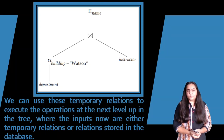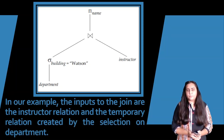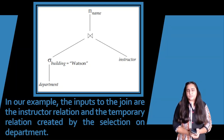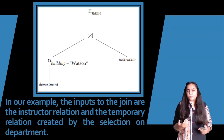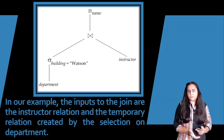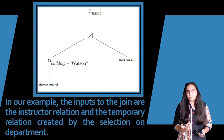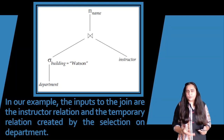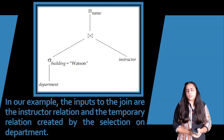In our example, the inputs to the join operation include one actual relation from the database — which is instructor — but the second input to the join operation is not a table. It is the result of some operation performed on an original table. Department is an original table on which the sigma building equals Watson operation was performed, creating a temporary relation which contains only those rows of department where building is Watson. So it's a temporary relation which is then passed to the join operation.